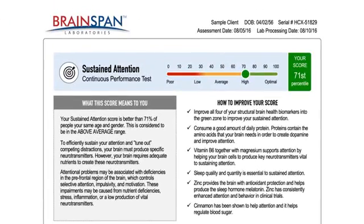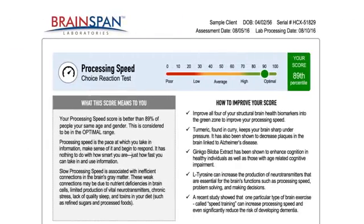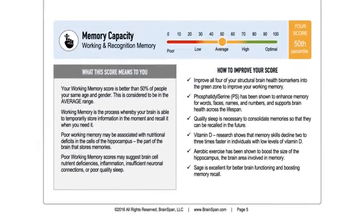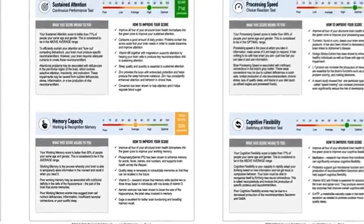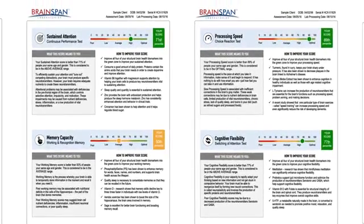The results of the cognitive function assessment are described to include the areas of attention, processing speed, and memory, linking them back to the nutritional metrics and specific lifestyle recommendations, making them more meaningful and motivating.